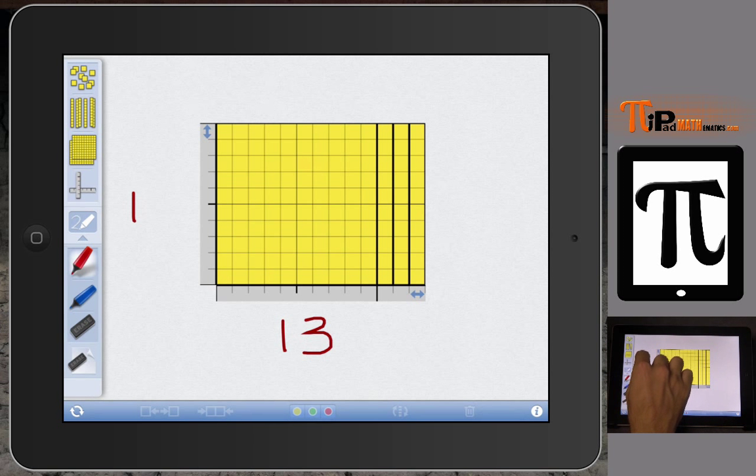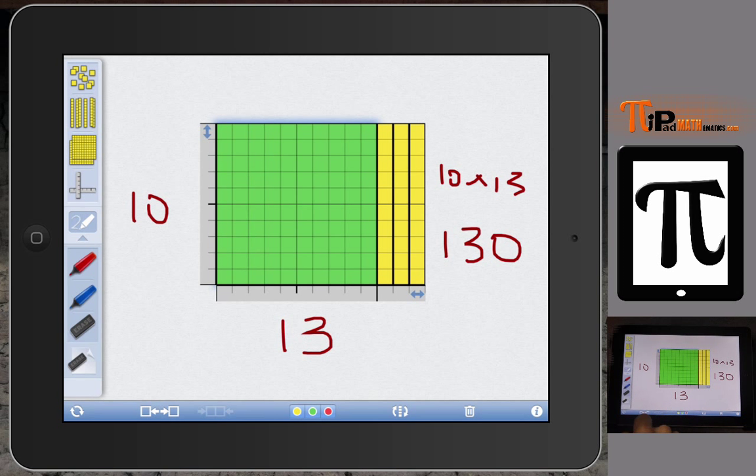And along the other dimension, we have 10. Now what we've modeled is a 10 by 13, which is going to be 10 times 13, which is 130. And you can see that by our original flat was 100. And then our other long was 10 plus 10 more plus 10 more. So altogether, we have 100 that's in a flat and 30 that's in our longs. So we have 130.